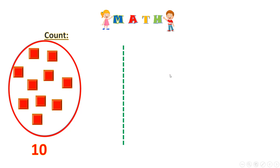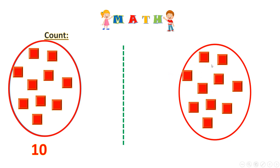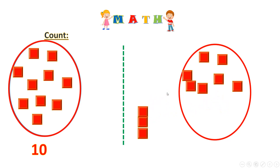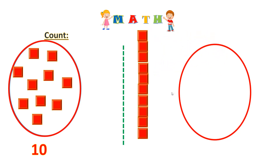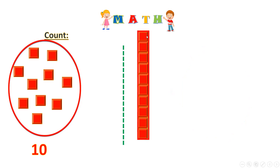Now, if I have the same group of squares which are 10 and I want to make them in a beautiful way, let's see how. We have here 1 and then 2 and then 3, 4, 5, 6, 7, 8, 9 and 10. Great! Now we will not put them in a bag. Now they are well arranged.